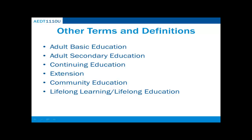There are a number of additional terms and definitions that are also used to describe adult learning and adult education. Adult basic education refers to instructional programs for adults whose basic skills in areas such as reading, writing, and computation are assessed below the 9th grade level. Adult secondary education includes the general education development or GED diploma, high school credit programs for adults, and external diploma programs. Continuing education is used by post-secondary institutions to refer to credit and non-credit activities that extend beyond the daytime programs serving students of traditional college age. Extension is also used to define an educational opportunity provided by colleges and universities to people who are not enrolled as regular students. Community education may refer to any formal or informal education that takes place in the community. Lifelong learning, or lifelong education, is a process of continuing to acquire knowledge and skills through formal and informal education throughout one's life.